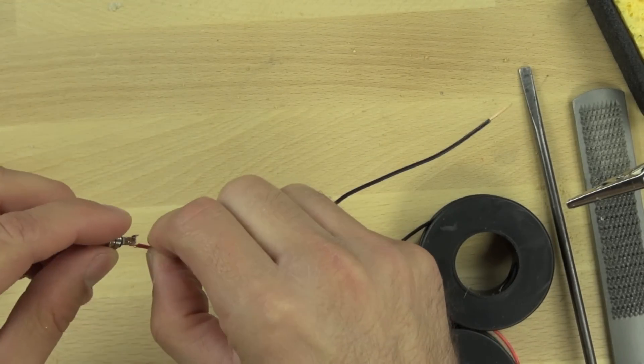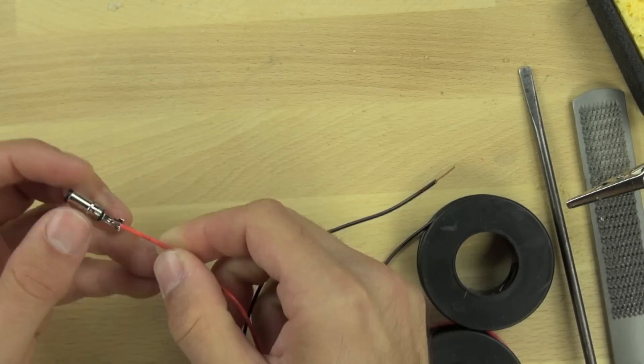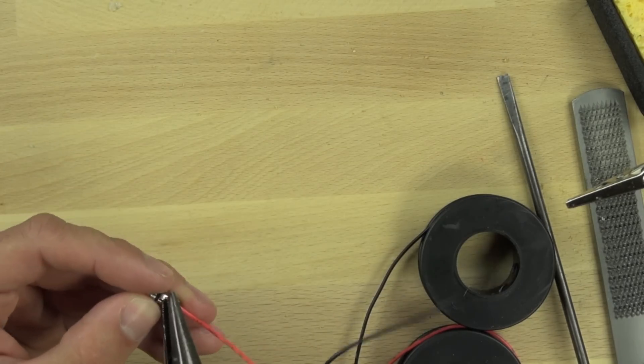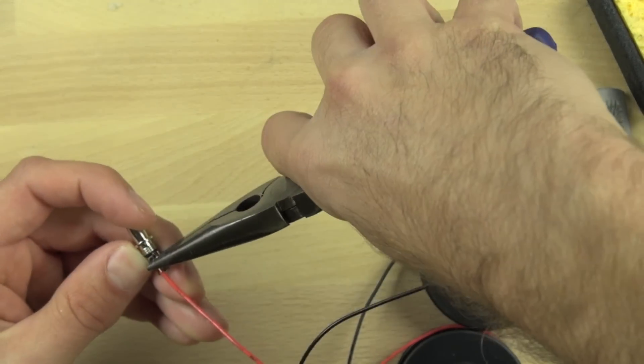We're going to connect our red wire to the center pin and loop it through the hole in the center pin. Once we've done that, we'll crimp the wire to make sure it's firmly in place.